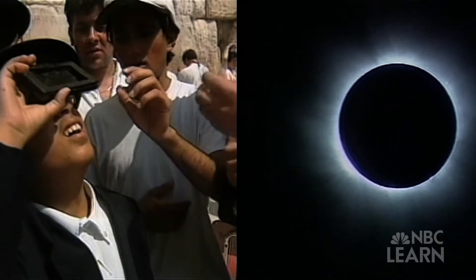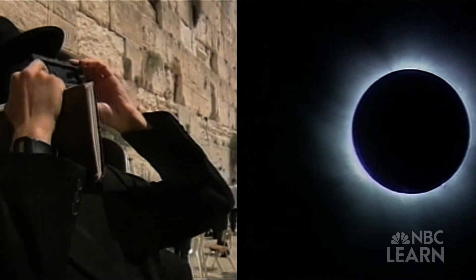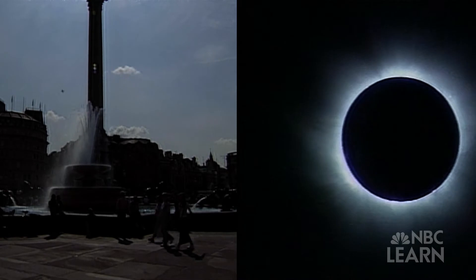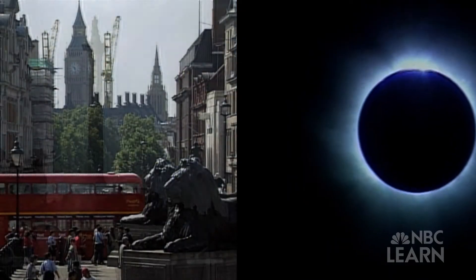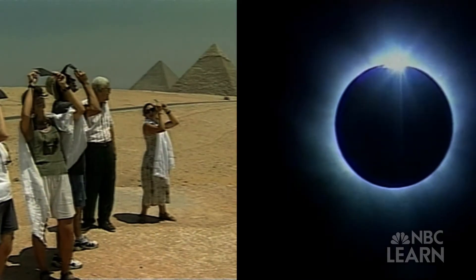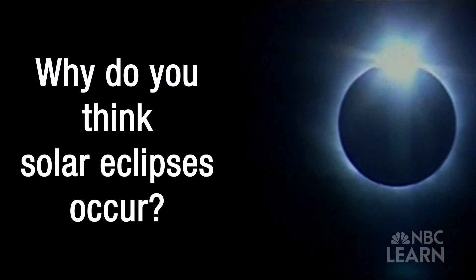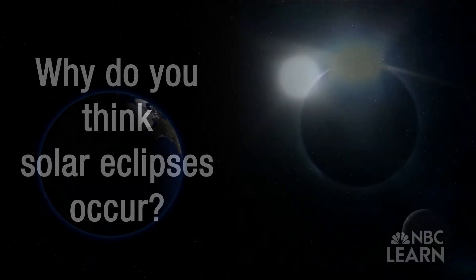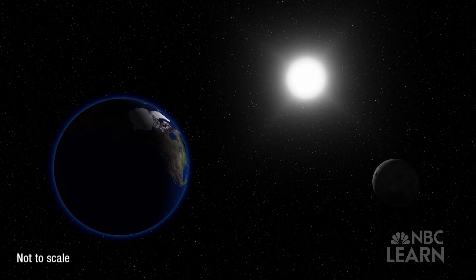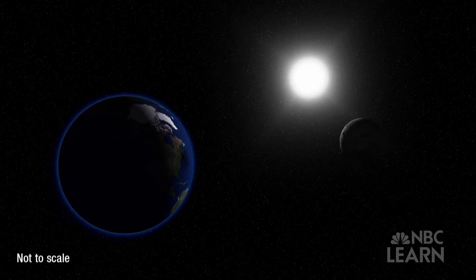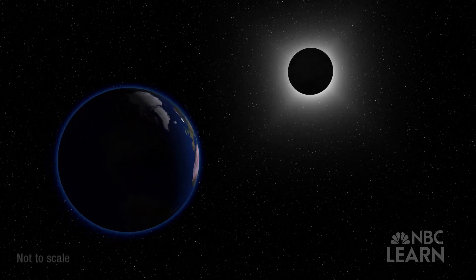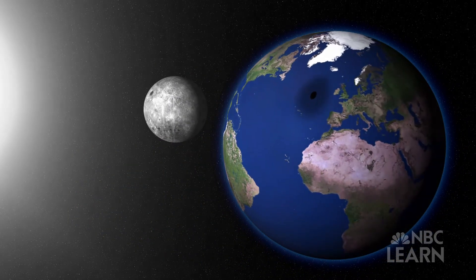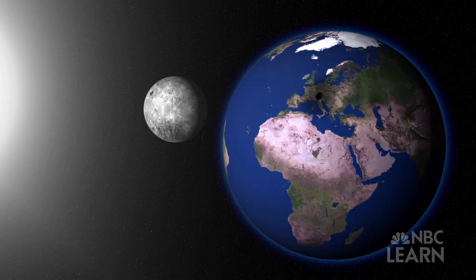On August 11, 1999, more than 2 billion people across Earth saw a total eclipse of the Sun. Daytime was turned into darkness from England to Egypt to India. A solar eclipse happens when the Moon's orbit around Earth takes it between Earth and the Sun, partially covering the Sun's light here on Earth. In the 1999 solar eclipse, the shadow of the Moon was cast across most of the eastern hemisphere.